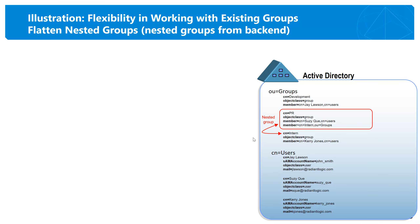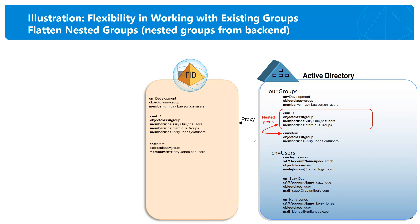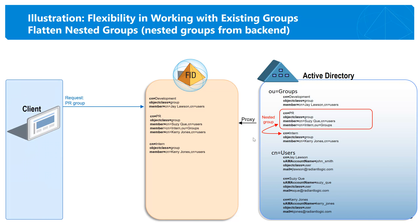Because of the inflexibility of categorizing users based on a single static group name, some administrators use nested groups — particularly in Active Directory — to segment users further. Using nesting, you can add a group as a member of another group to allow inheritance of permissions. In this example, the intern group is a member of the PR group. Just as not all applications can work with LDAP dynamic groups, not all can deal with nested groups. With Radiant One, you can flatten nested groups to deliver the group information to the application — the client requests the PR group and Radiant One flattens the nested group, returning all members in a single search response.